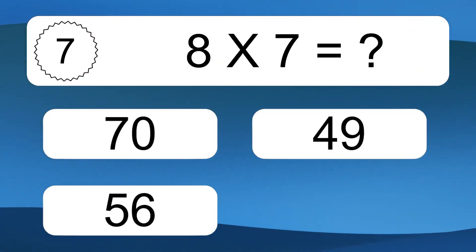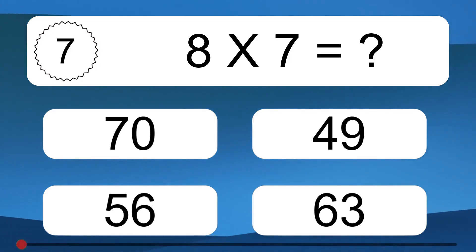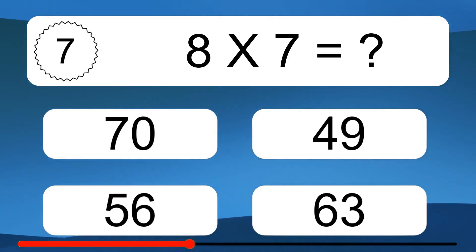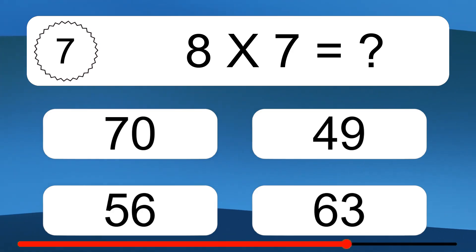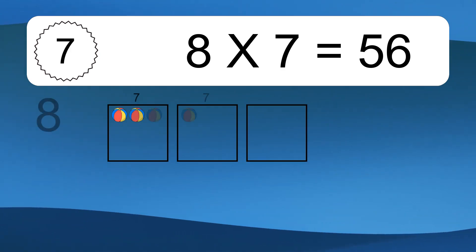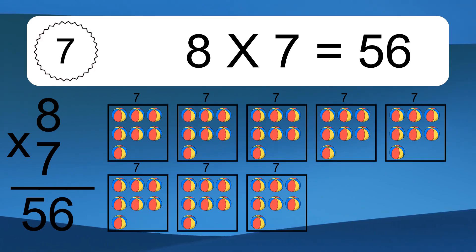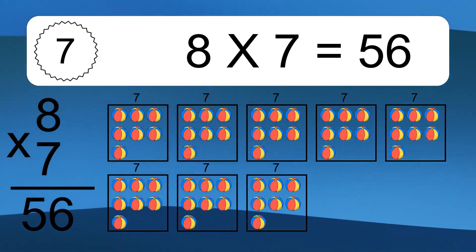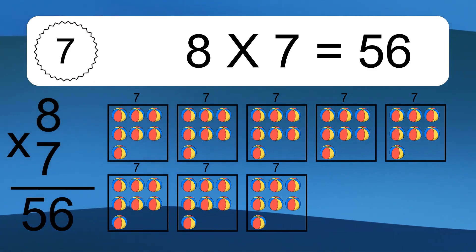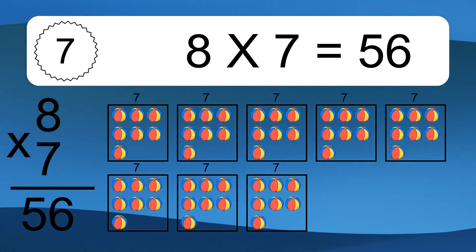8 times 7 equals what? 8 times 7 equals 56. We have 8 boxes, and each box has 7 colorful balls inside. If you count all the balls in all the boxes together, you will have 8 times 7 balls. This equals 56 balls.